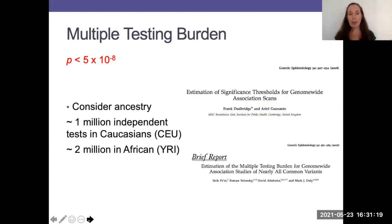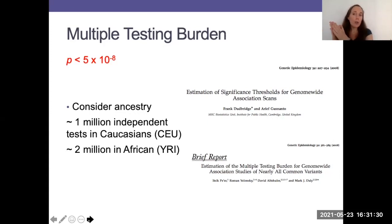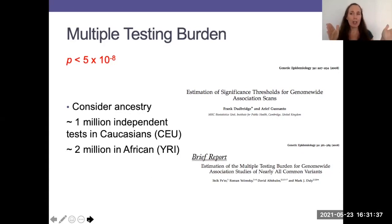Another important consideration with genome-wide association studies is the multiple testing burden. If you're looking at an outcome and you've got hundreds of thousands of individuals all being tested at millions of points in the genome, you're going to get associations by chance alone. So we need to control our type one error rate.